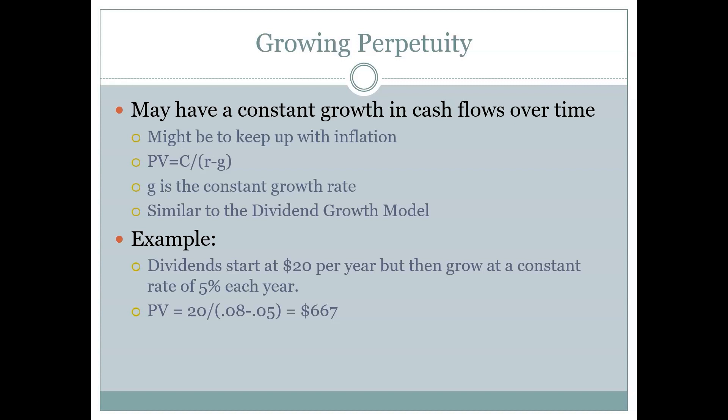The formula for a growing perpetuity isn't that different. Instead of C divided by R, it is C divided by R minus G, where G is the growth rate. So it's the cash flow you're going to receive divided by the discount rate minus the growth rate. There's no specific calculator function, but this is on your formula sheet for exams, so you don't have to memorize it — just remember what everything is and where it goes.